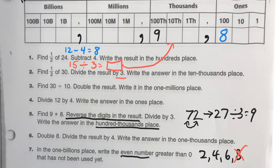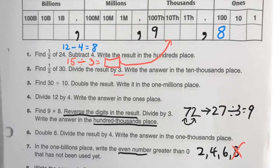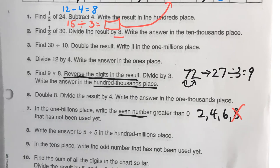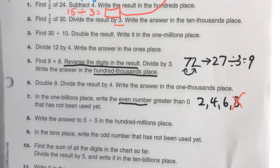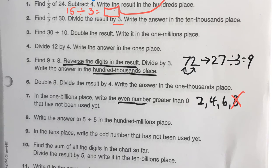And let's just keep going. 5 divided by 500 millions. So, you can do that. Same thing here. In the tens place, write the odd number that has not been used yet.